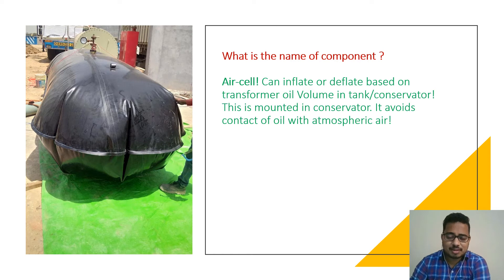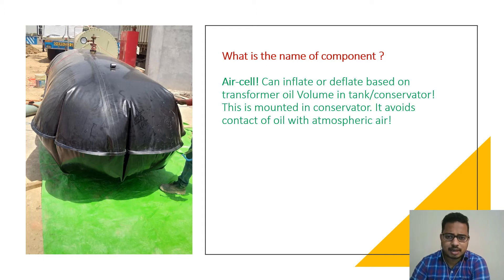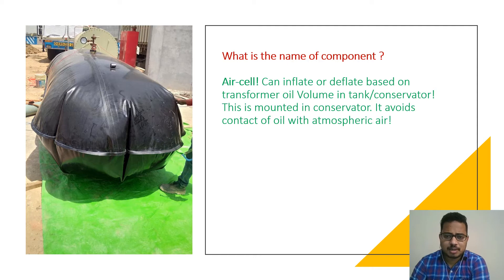Today's question is: what is the name of this component and where is it used? The left side component — what is it? The black color one you see — it is used in a transformer. Very high rating transformers can inflate or deflate based on transformer oil volume in the tank or conservator.